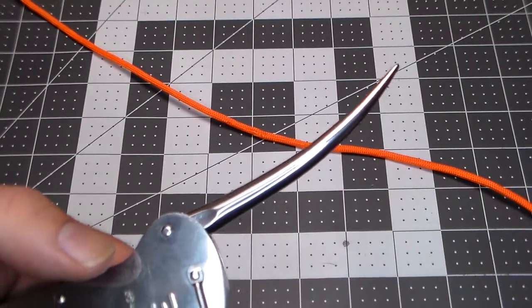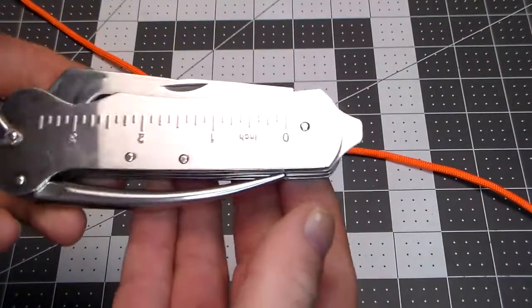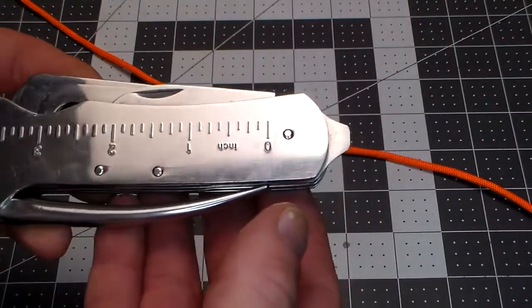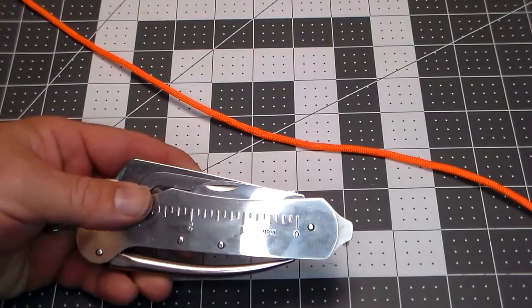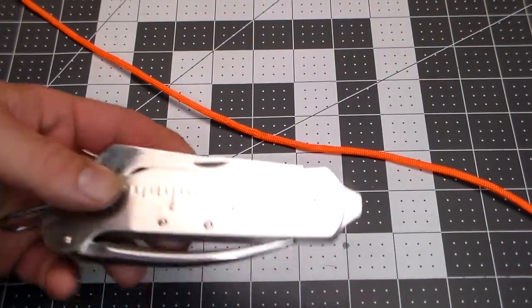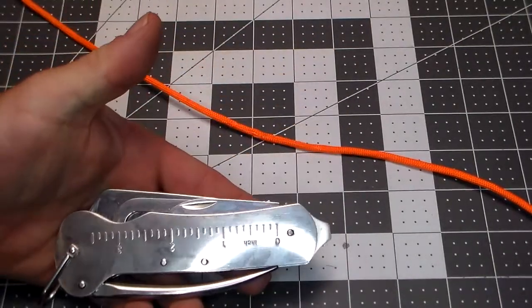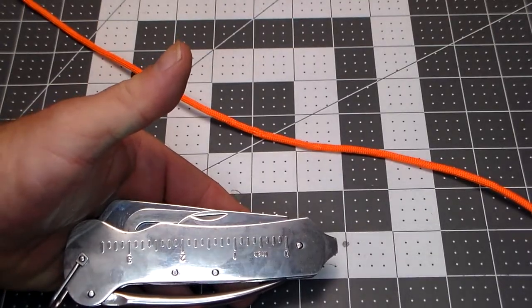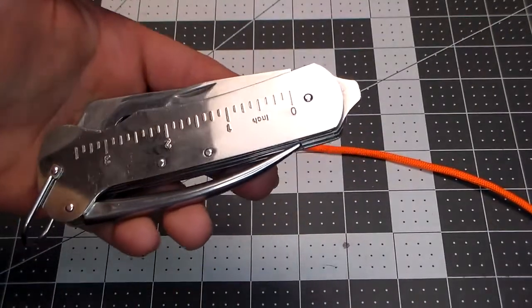That is a marlin spike. Now this entire tool, this is called a marlin spike knife. It probably was pretty close to one of the original multi tools. Now these were used by sailors, netmakers and other people who worked on the coasts, on the ocean coasts. They made their living that way.